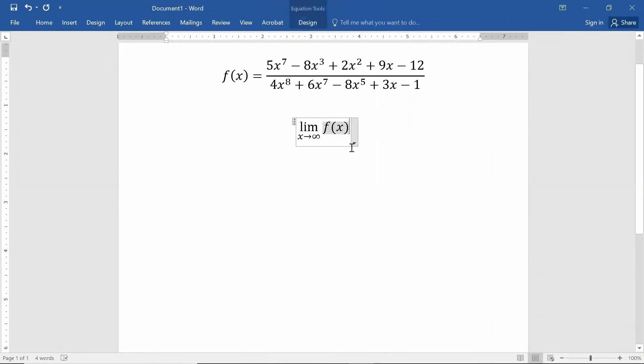Alright. So the limit as x goes to infinity of f of x. Notice that in this case, the degree on top is smaller than the degree on bottom.